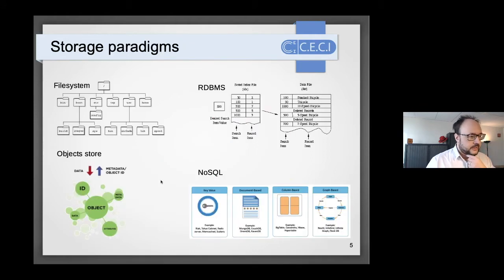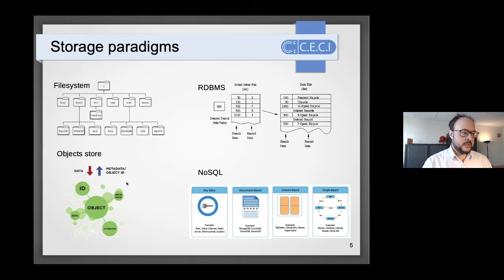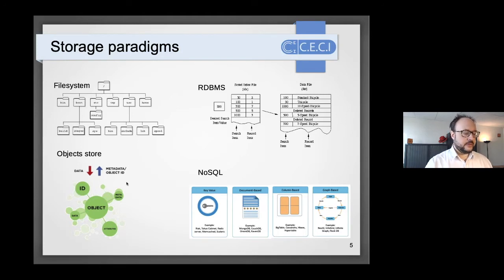Object stores are coming closer to the HPC world. They look similar to file systems in that you store data, but the key difference is that you can associate arbitrary metadata with the stored objects and query that metadata directly. From the back-end perspective, object stores have built-in redundancy and high availability. They are also designed primarily for a write-once, multiple-reads access pattern, unlike file systems.